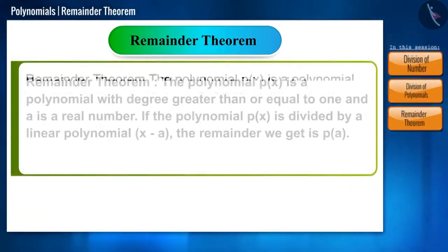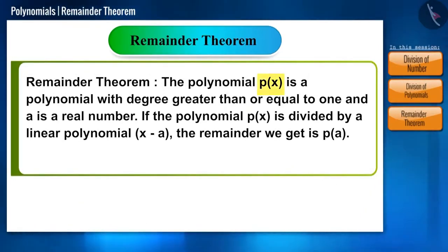So friends, let's assume p of x is a polynomial with degree greater than or equal to 1 and a is a real number. If the polynomial p of x is divided by a linear polynomial x minus a, the remainder we get is p of a.